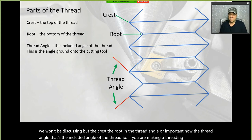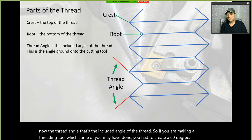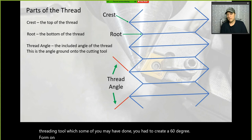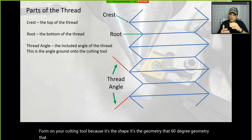If you are making a threading tool, as some of you may have done, you had to create a 60-degree form on your cutting tool because it's the 60-degree geometry that will plunge into your part to create your thread.